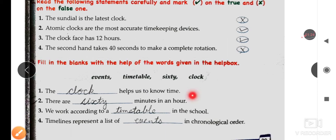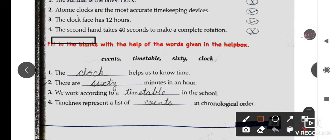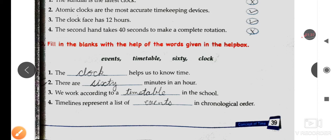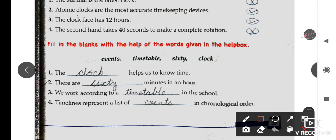Now Part D: Fill in the blanks with the help of the words given in the help box. The help box has these words: events, timetable, 60, and clock. Number 1: The clock helps us to know time. Number 2: There are sixty minutes in an hour. Number 3: We work according to a timetable in the school.